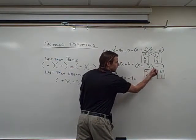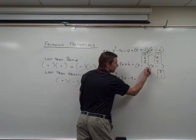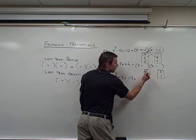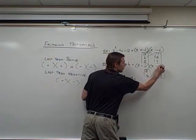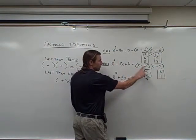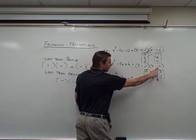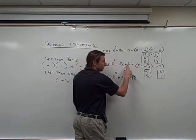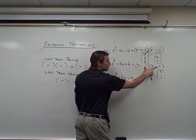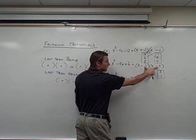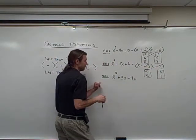Since both signs are negative, it doesn't matter whether I put the 3 or the 2 first. I'll put in the 2 and put in the 3. Negative 2 times negative 3 gives me a positive 6, and negative 2 plus negative 3 adds to give me a negative 5.